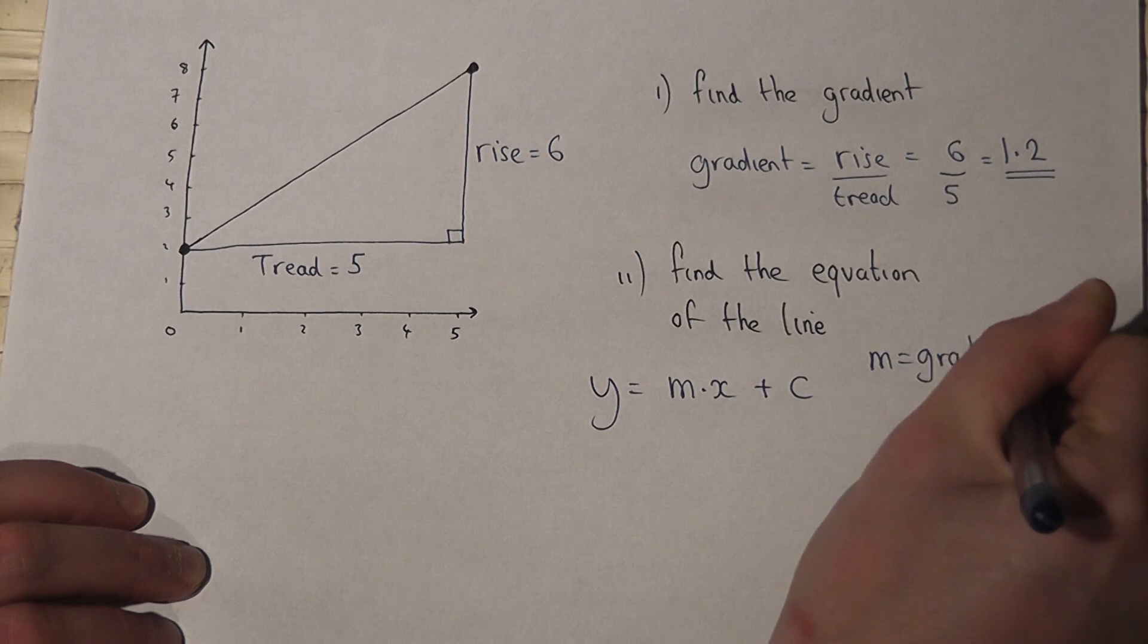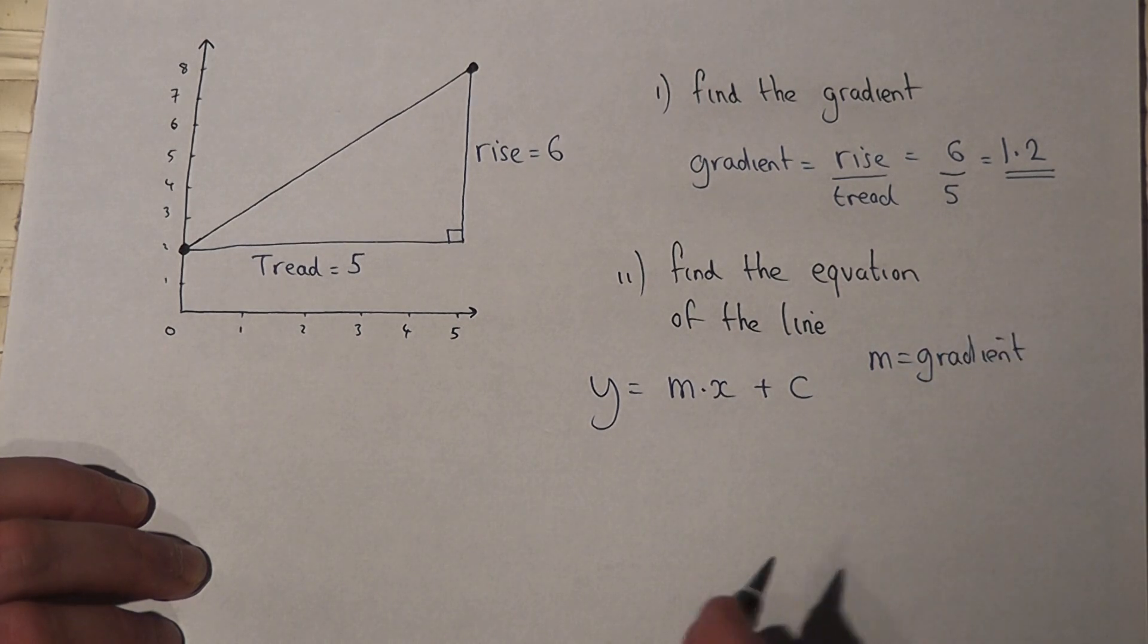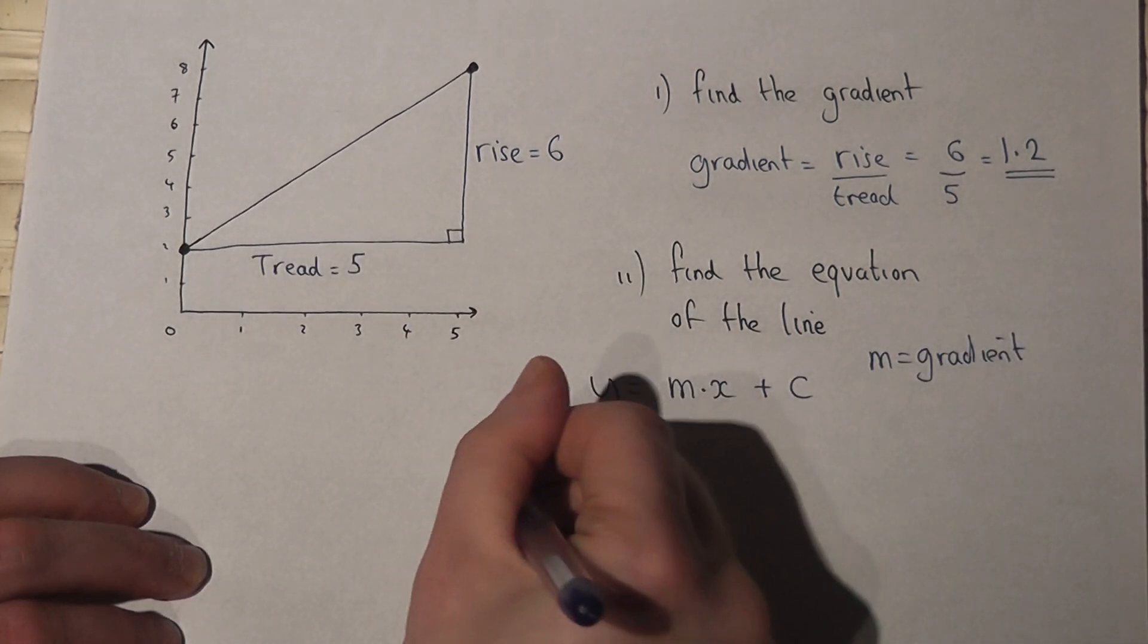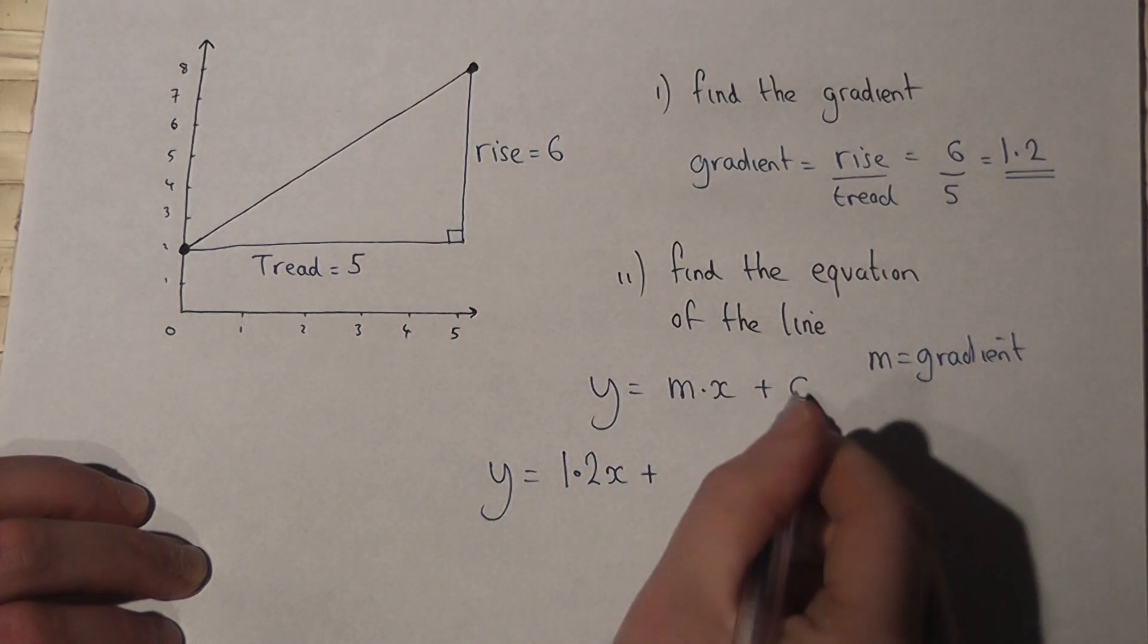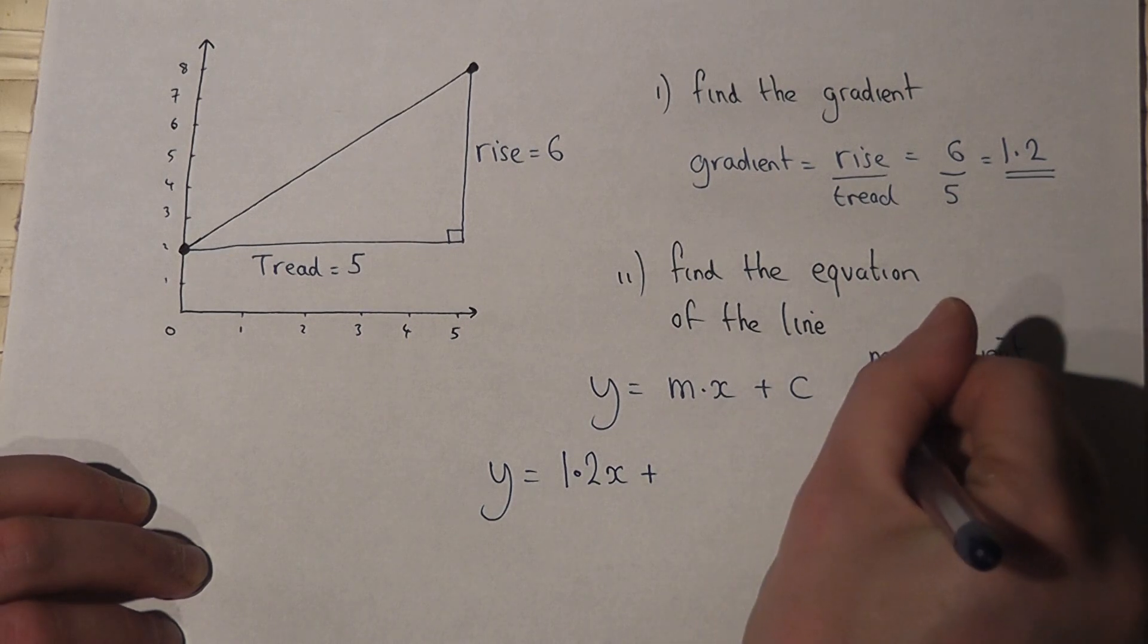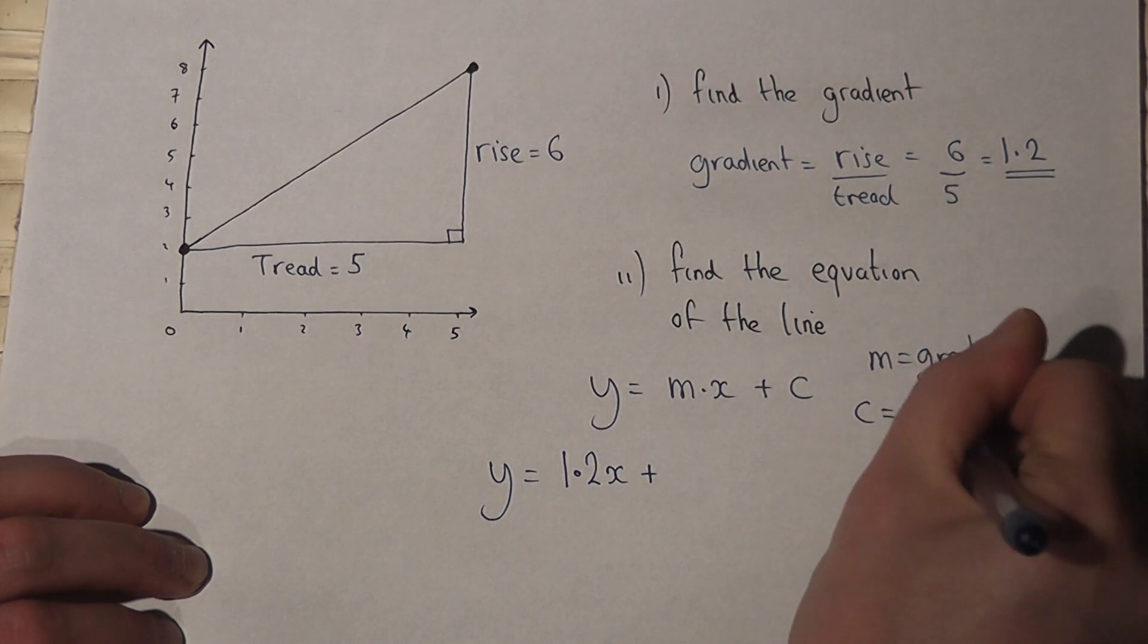Now we've found the gradient is 1.2. So for our straight line, y will equal 1.2 times x plus this c value. Now c is always the y-intercept.